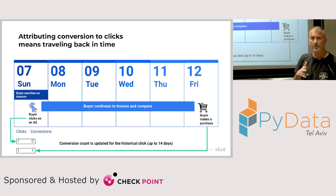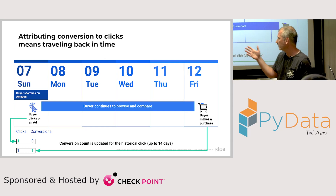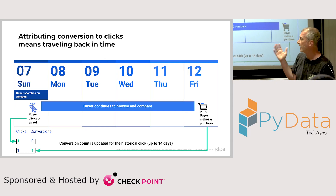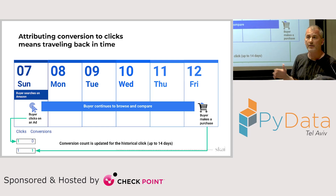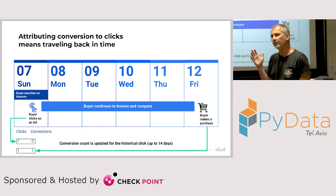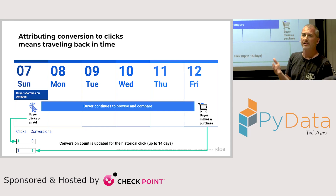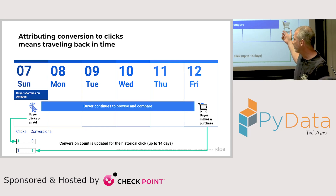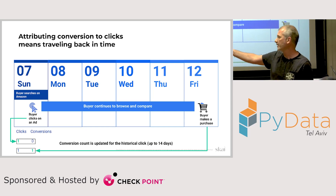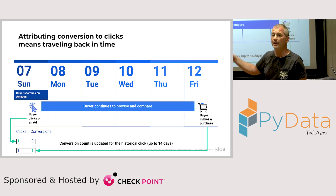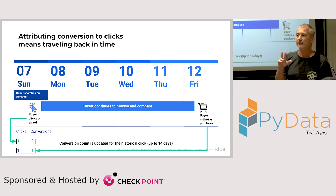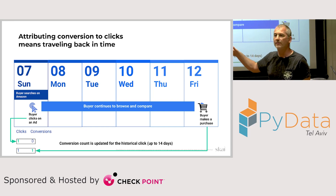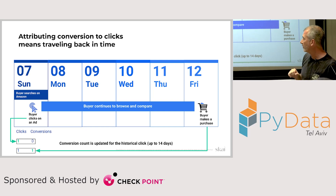So why is there even an issue here? This is a classical example: a potential buyer searches on Amazon and clicks on an ad, but they don't make the purchase immediately. It might be the beginning of the week, they need time to think, browse, compare other products. Only on Friday do they actually make the purchase. But at the point of purchase, we're actually updating the conversion count for Sunday — you can think of this as a kind of travel back in time, and that's how we get the notion of how efficient the campaign is.